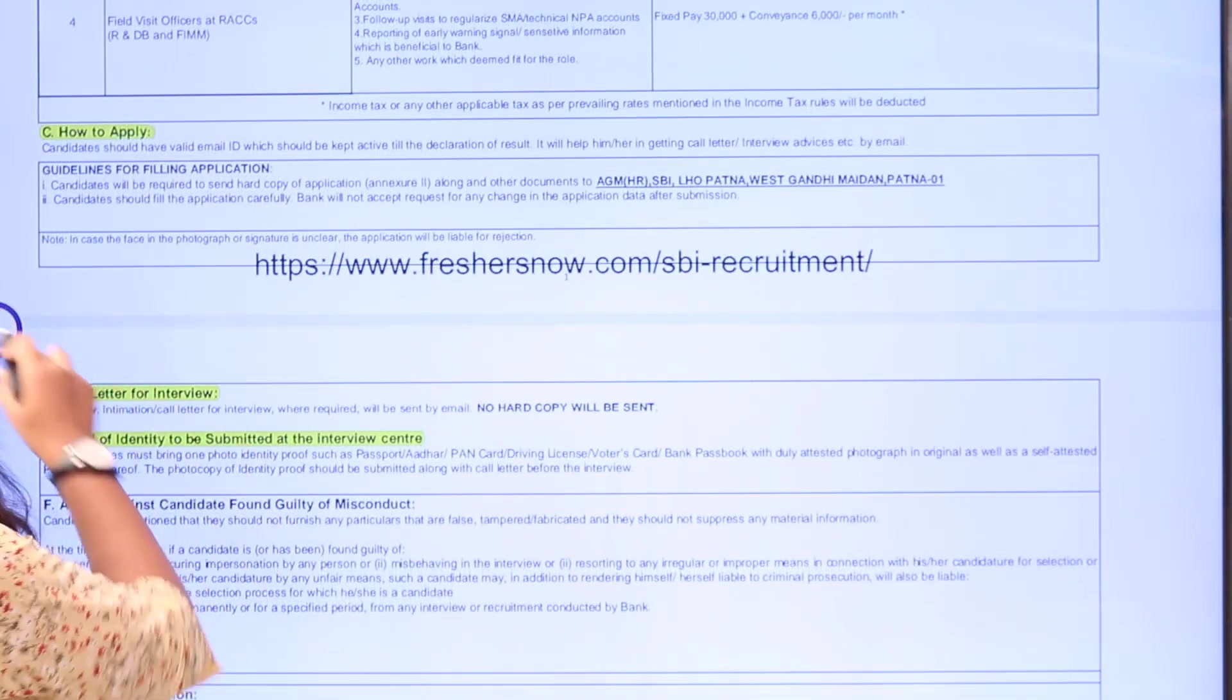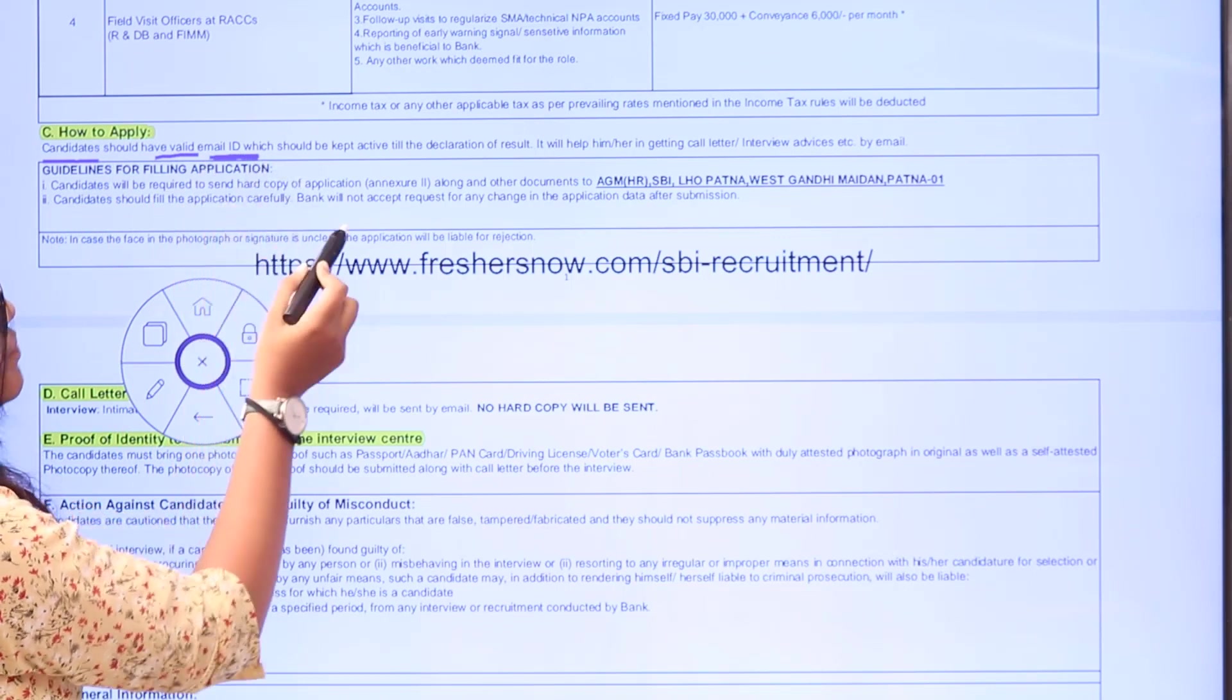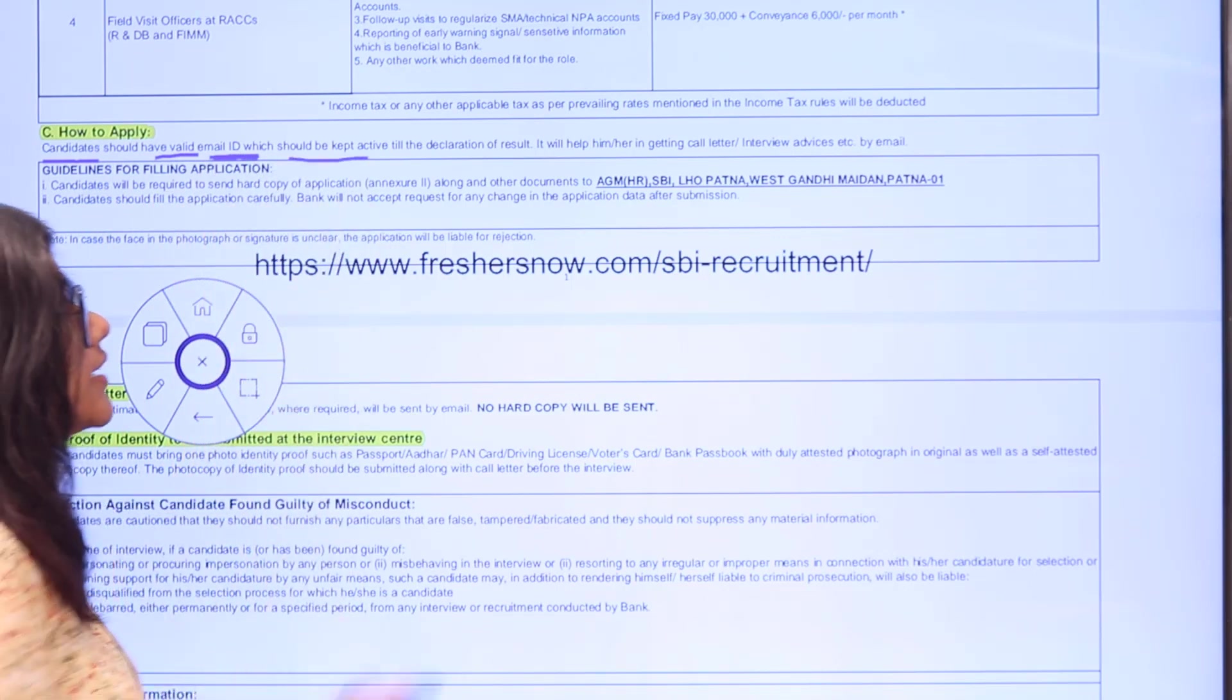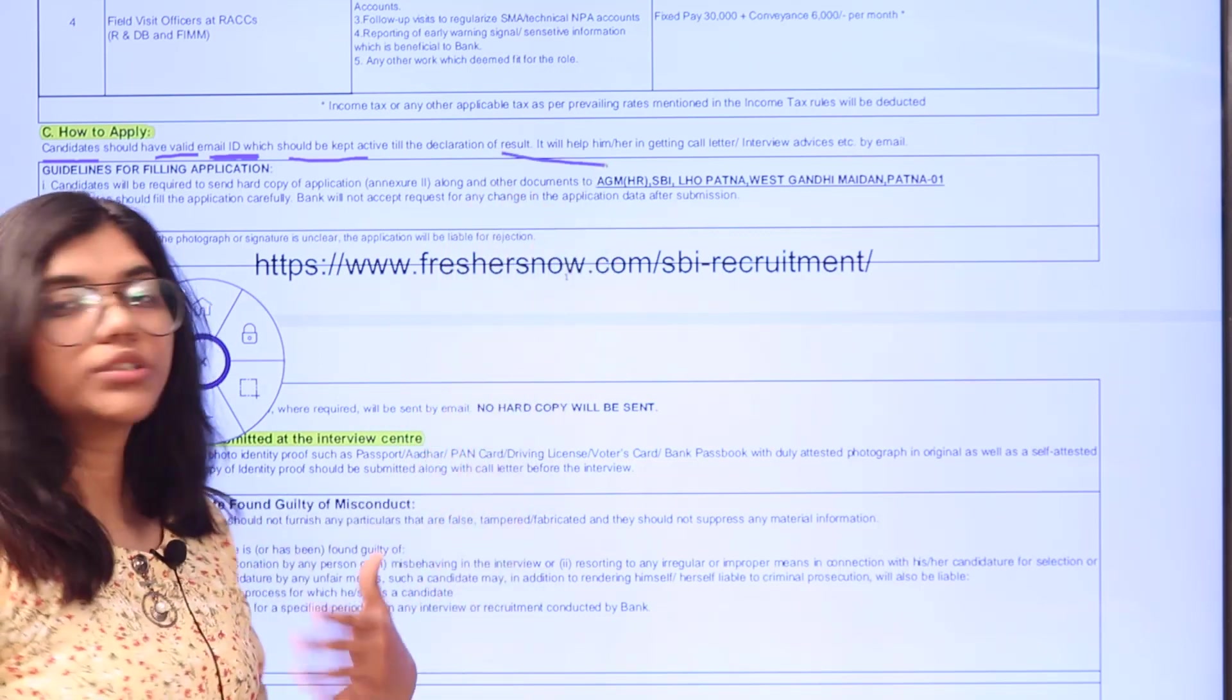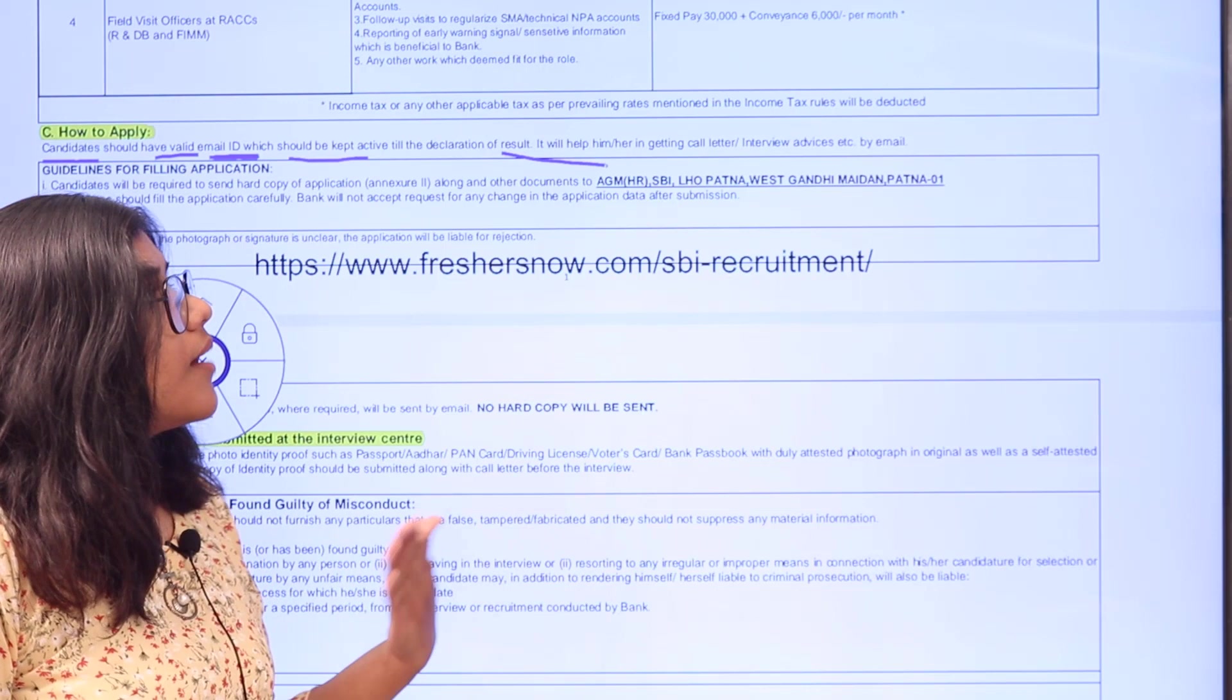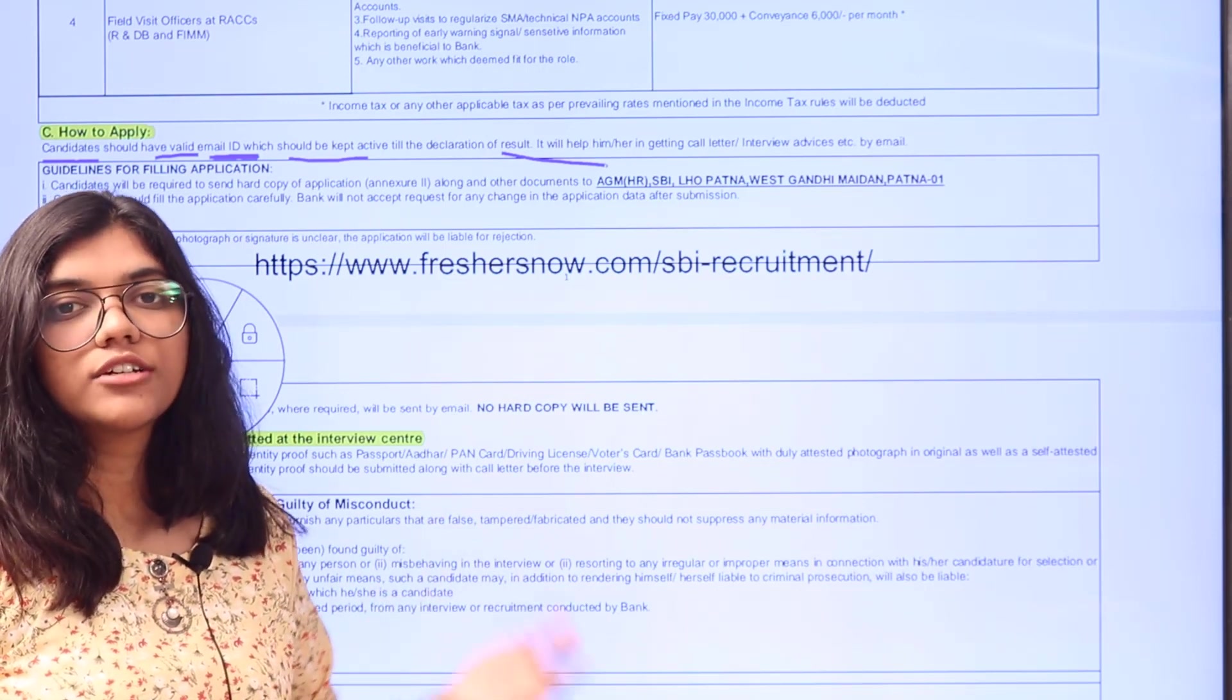Now, how to apply for this post. Candidates should have a valid email ID and keep it active until the declaration of results. This will be helpful in getting the call letter, as interview advices will be sent by email only. All communication from officials to candidates will be done directly through email.